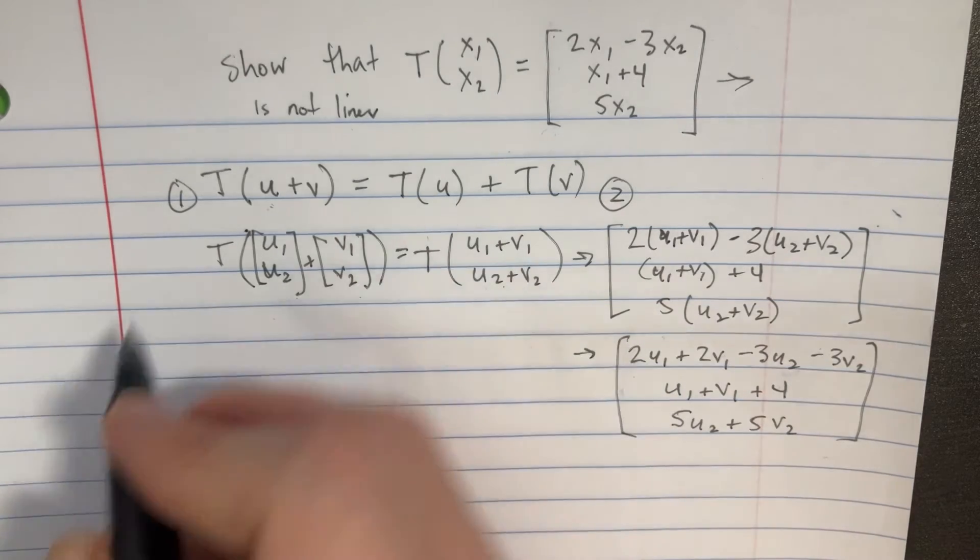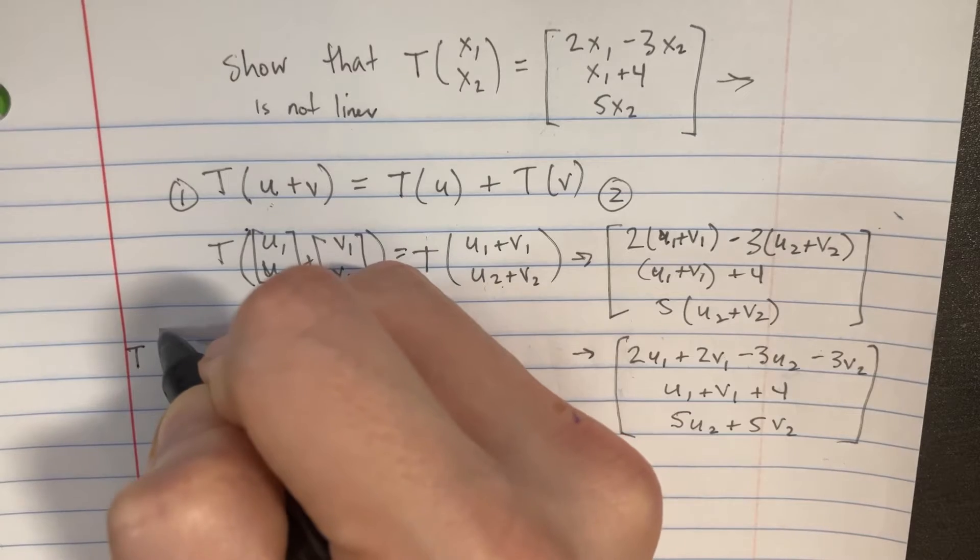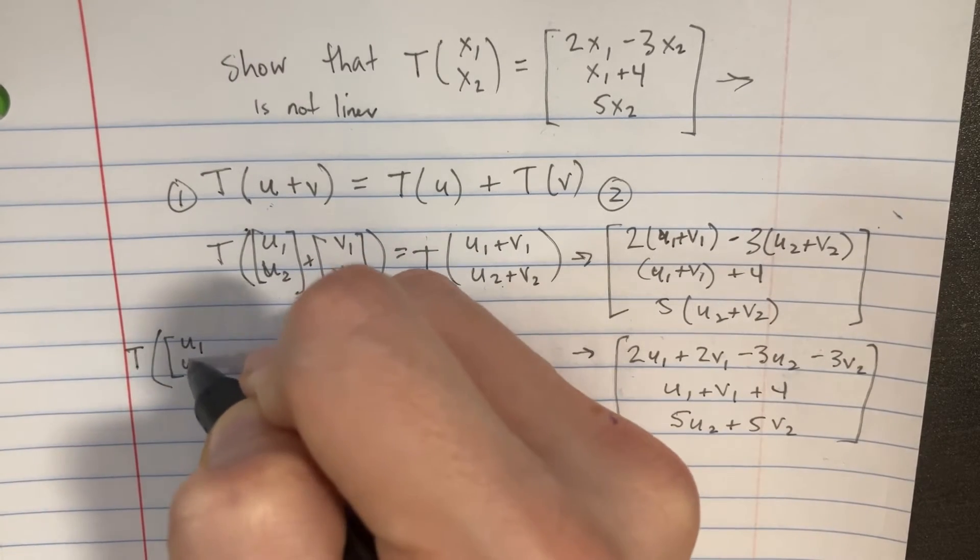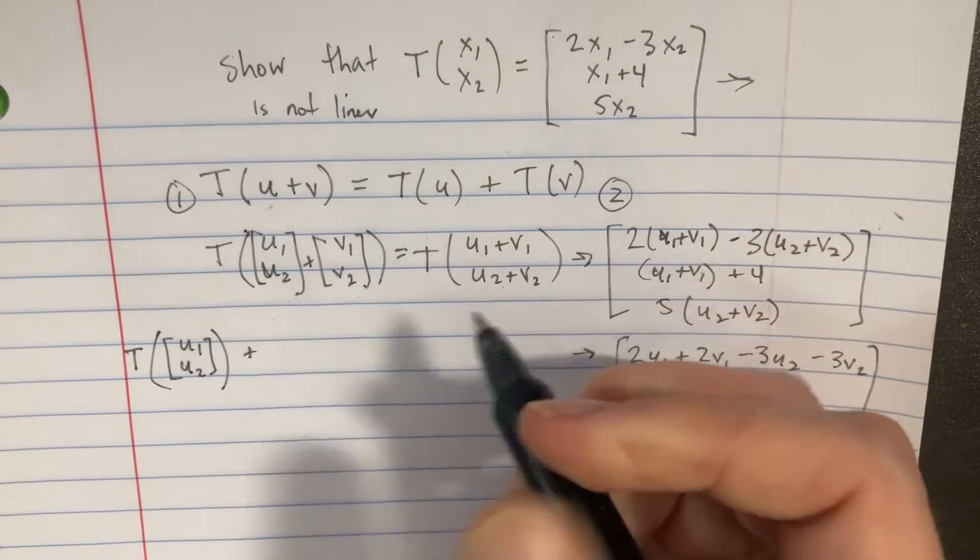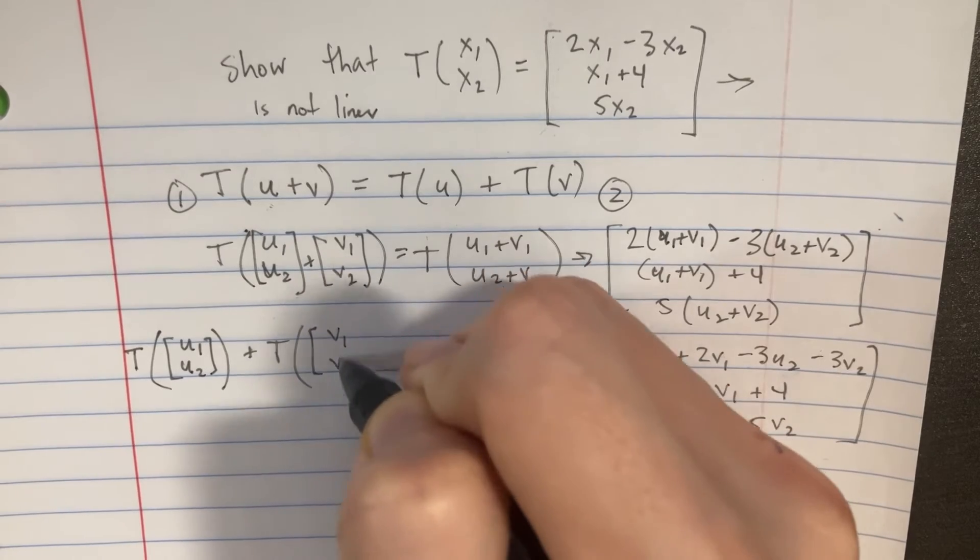Now let's try to squeeze the second half in here, so we're going to go T, and then we're going to take the first transformation first, so we're going to go with U1 and U2, and we're going to add that to a T with V1 and V2.